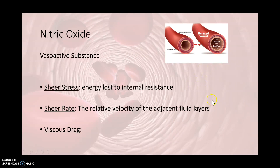Nitric oxide is considered a vasoactive substance which can impact the luminal size of the vessel. As we exercise and lose plasma volume, the blood becomes more viscous. An increase in viscosity increases the shear stress placed upon the vessel as blood moves through it. Shear stress is the energy lost due to internal resistance, and this energy lost will be in the form of pressure — going back to bioenergetics and our gradients, pressure is an energy form.